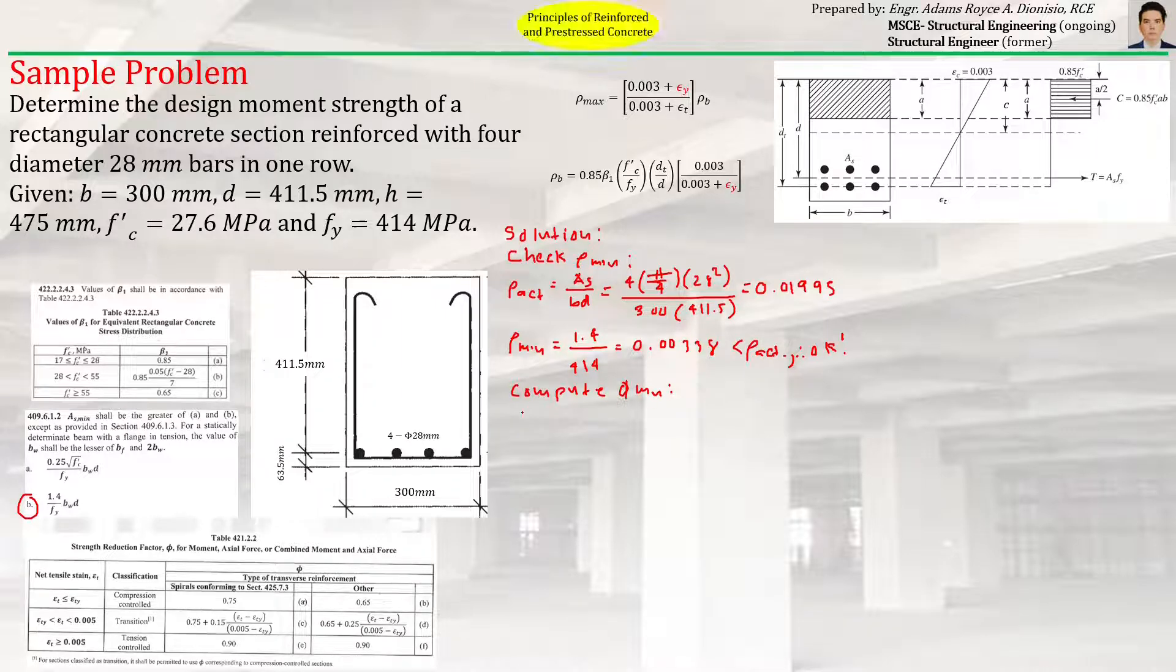We know that φMn is equal to φ times As times fy times (d - a/2). The unknowns are: As is given, fy is given, d is given,